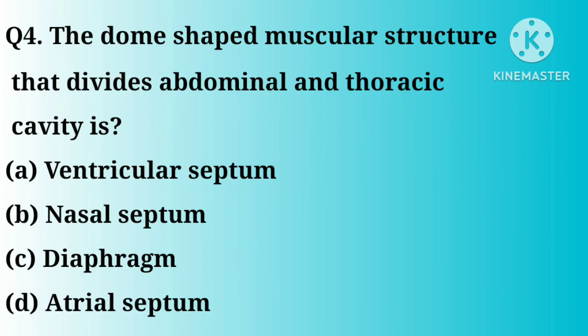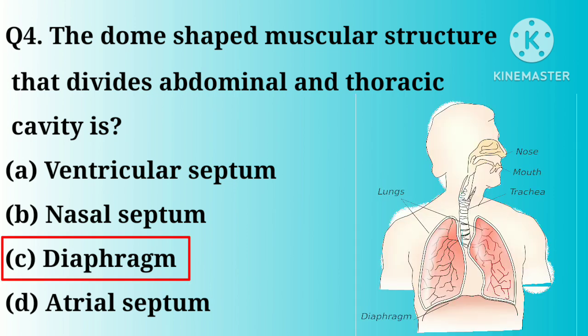Q4. The dome-shaped muscular structure that divides the abdominal and thoracic cavity is: option A, ventricular septum; B, nasal septum; C, diaphragm; D, atrial septum. Great answer, option C.